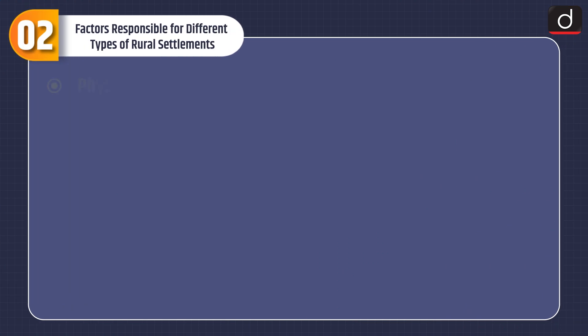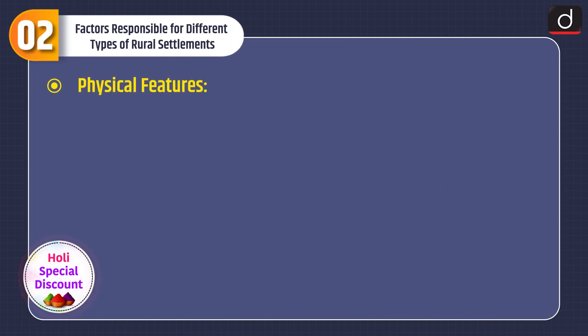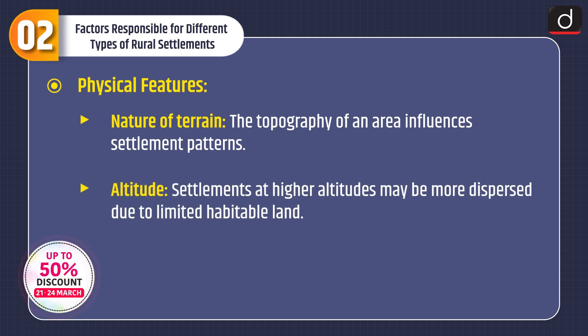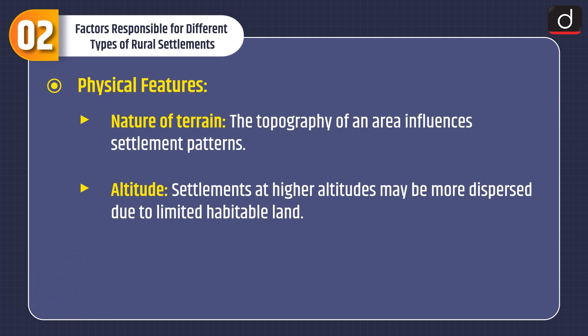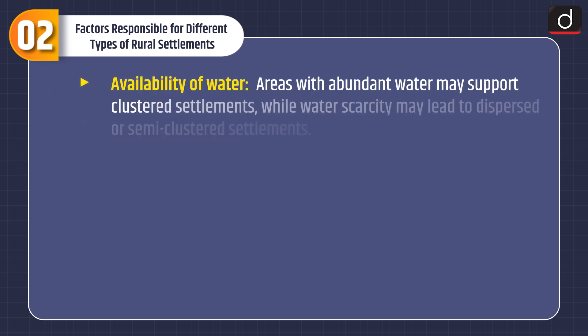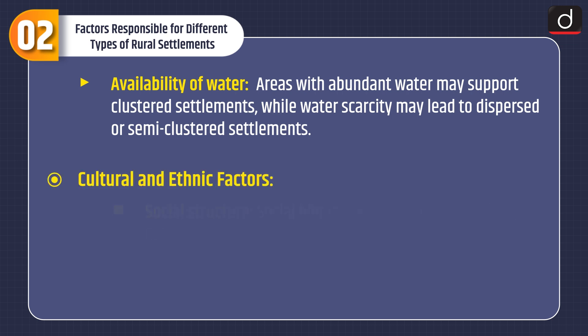Now moving on to factors responsible for different types of rural settlements. Physical features: Nature of terrain — the topography of an area influences settlement patterns. Altitude — settlements at higher altitudes may be more dispersed due to limited habitable land. Climate affects agricultural productivity and resource availability, influencing settlement distribution and patterns. Availability of water — areas with abundant water may support clustered settlements, while water scarcity may lead to dispersed or semi-clustered settlements.